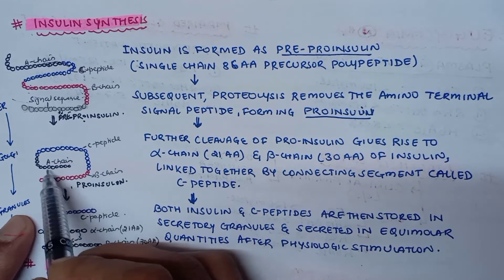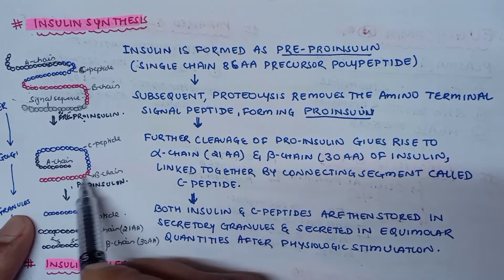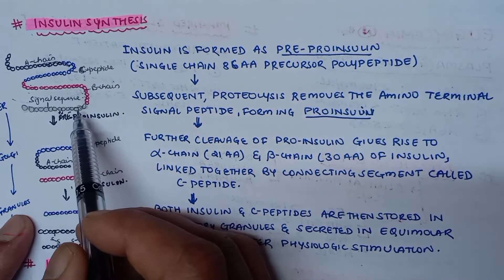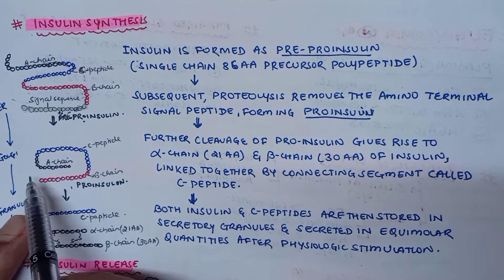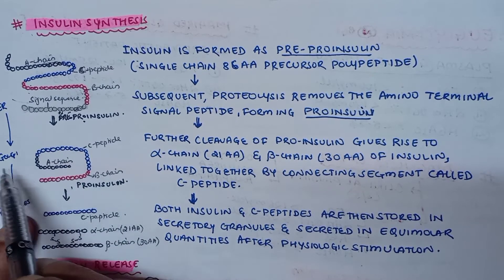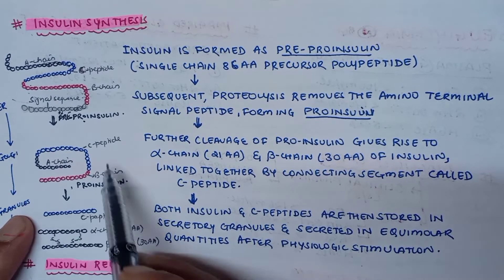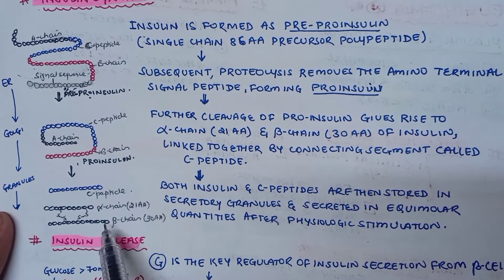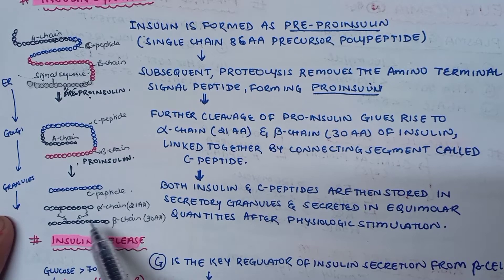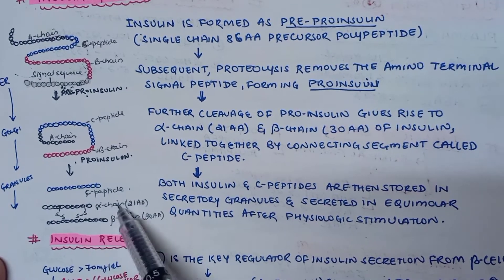In pro-insulin, the signal sequence has been removed, leaving the alpha chain, C peptide, and beta chain. This takes place in the Golgi bodies. Further cleavage of pro-insulin gives rise to an alpha chain of 21 amino acids and a beta chain of 30 amino acids, linked together by connecting segments called C peptides.